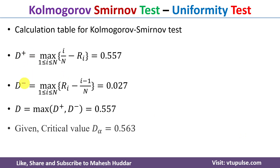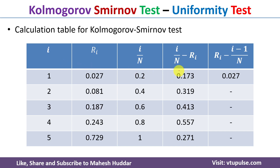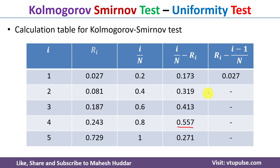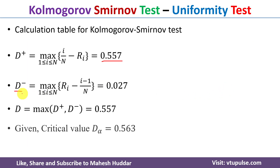Next, we calculate the D+ and D- values. D+ is always the maximum of i/n minus Ri for all values of i from 1 to n. From the previous table, 0.557 is the maximum value for i/n minus Ri, so D+ equals 0.557. D- is the maximum of Ri minus (i-1)/n for all i values from 1 to n. From the table, we get D- as 0.027.